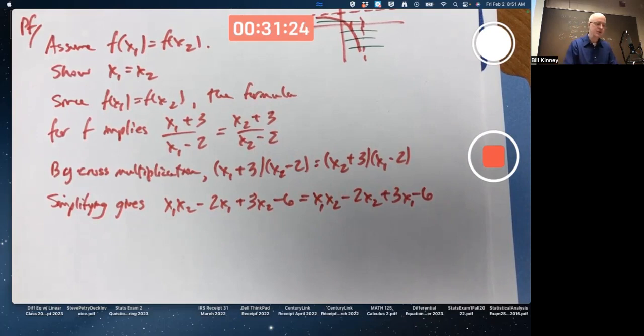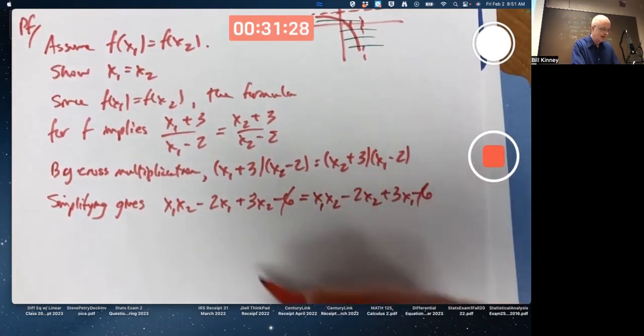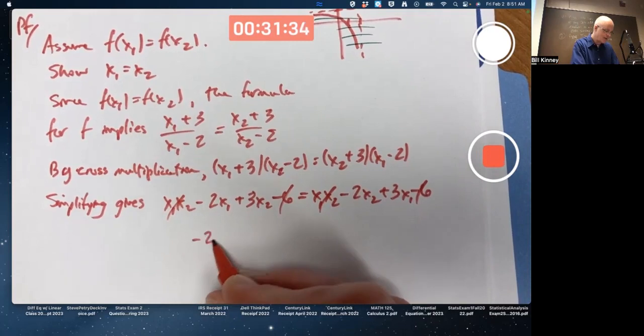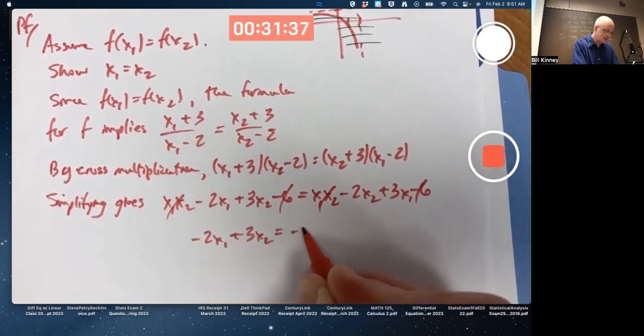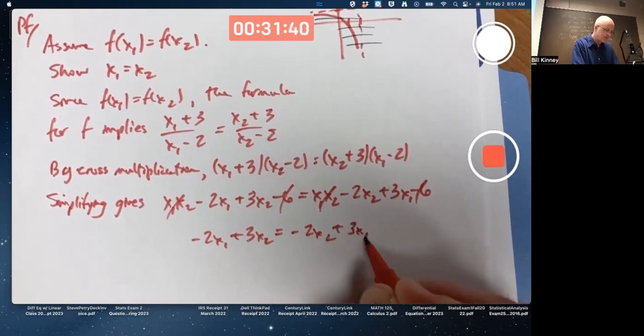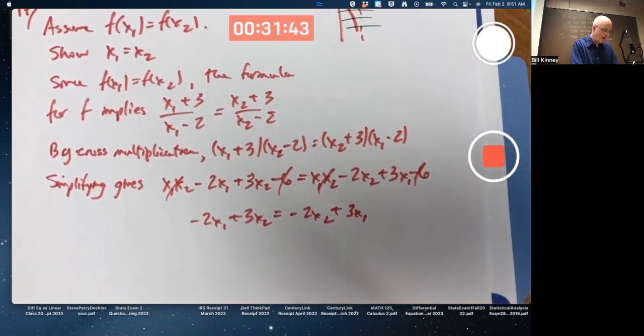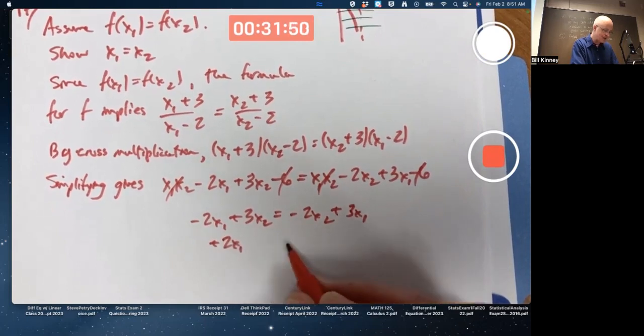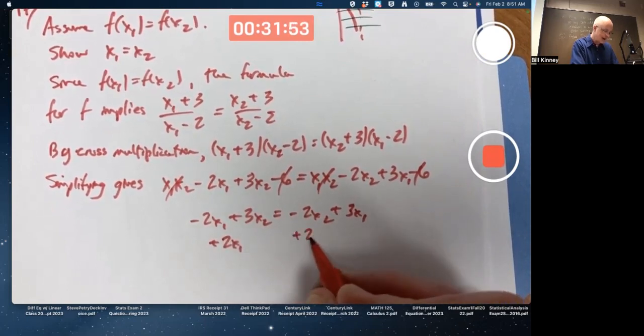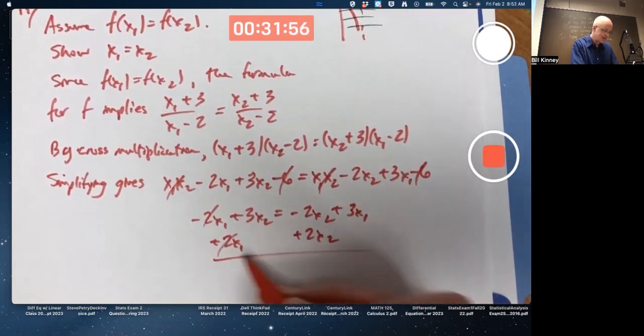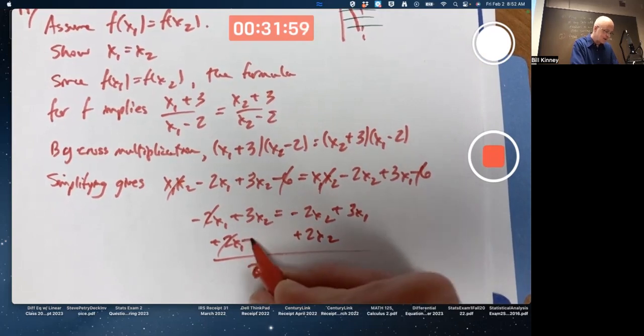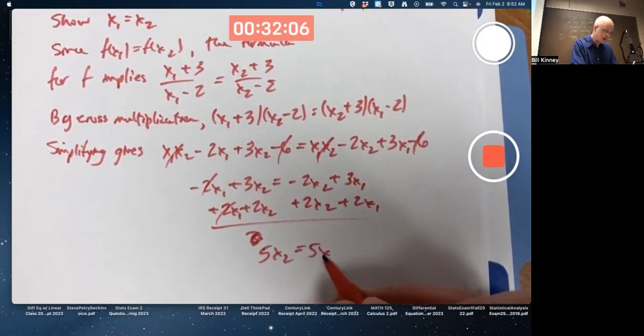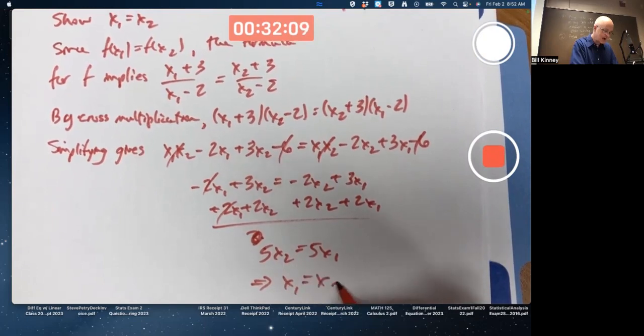To save time, let's just cancel right away. The 6s cancel right away. The x1 times x2 is canceled right away. So we get negative 2x1 plus 3x2 equals negative 2x2 plus 3x1. Continue simplifying. Let's add 2x1 to both sides and also add 2x2. Those cancel. I got to do it to both sides. What I end up with is 5x2 equals 5x1, so x1 equals x2. I'm done, praise the Lord.